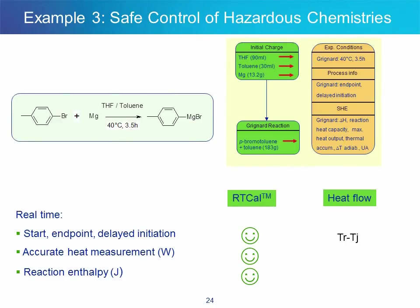The model reaction here is the formation of 4-methylmagnesium bromide. The initial reaction charge includes THF, toluene, and magnesium metal. The temperature is raised to 40°C and 4-bromotoluene is added to the vessel. We want to detect the reaction start points, have a better insight into the delayed initiation that characterizes Grignard reactions in general, and know when the reaction is completed, as well as the overall generated heat, the maximum heat outputs at maximum rate points, and key safety variables.